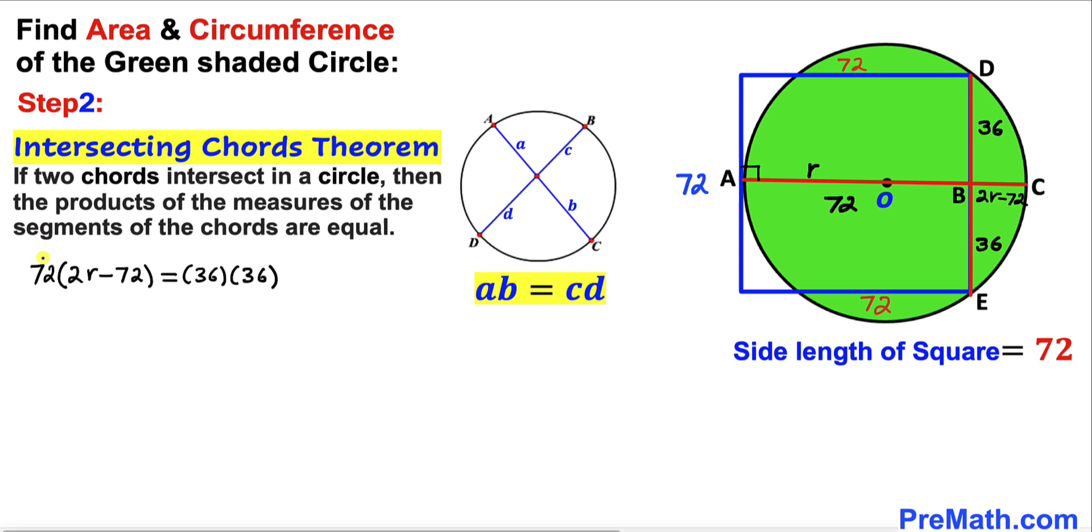Now let's go ahead and distribute. This gives us 144R minus 5184 equals 1296. Let's go ahead and divide both sides by 144 to isolate R. So our radius R turns out to be 45 units.